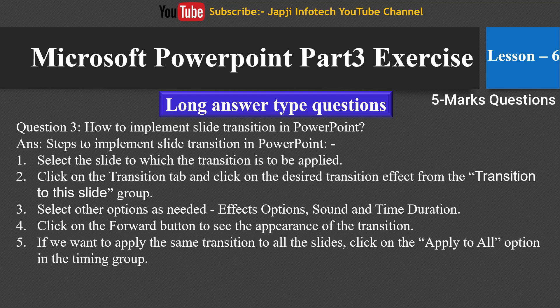The third question: how do you implement slide transition in PowerPoint? The steps are: select the slide to which the transition is to be applied, click on the Transitions tab, click on the desired transition effect from the Transition to This Slide group, select other options as needed such as effect option, sound, and duration, click the Forward button to preview the transition, and if you want to apply the same transition to all slides, click Apply to All in the Timing group.